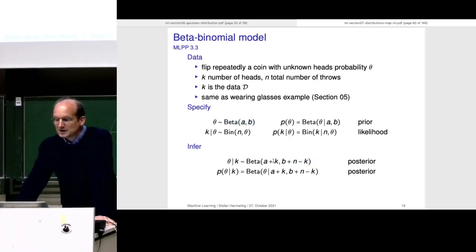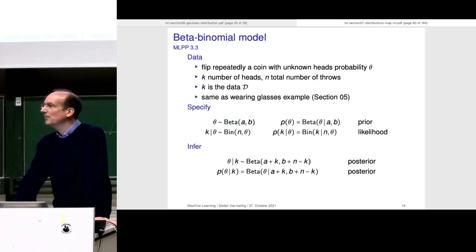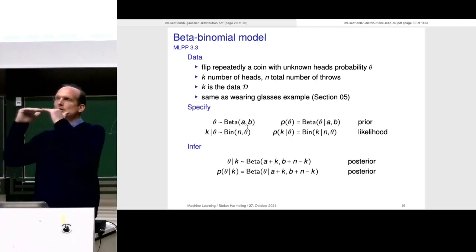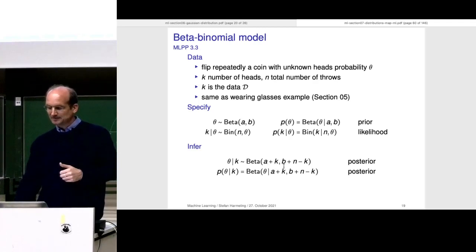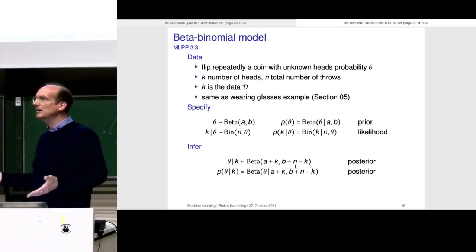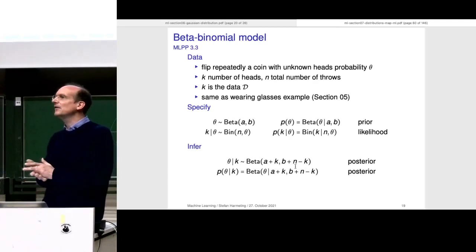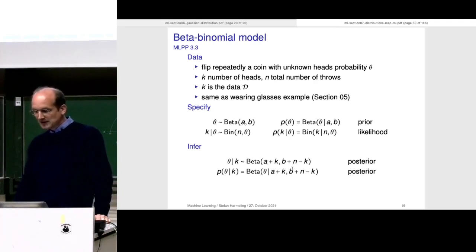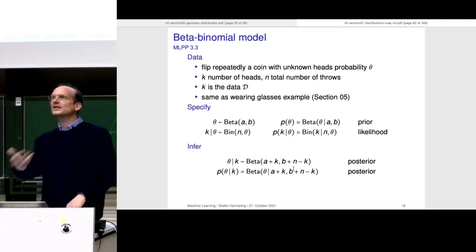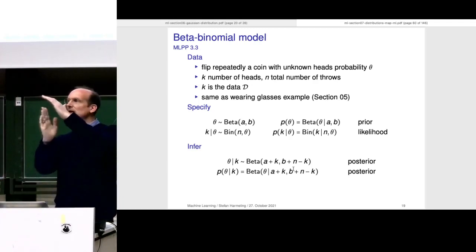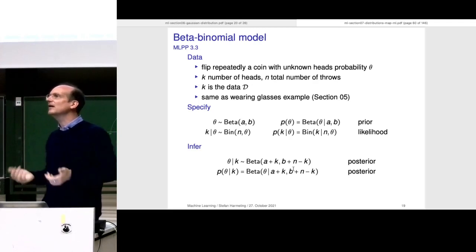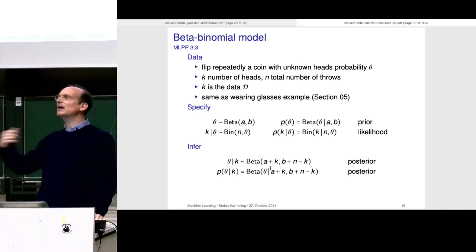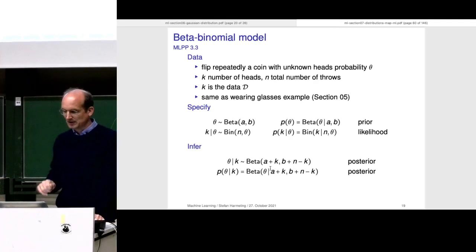If a and b are equal to one — corresponding to a uniform prior — and you observe k heads in n throws, the posterior shifts to the right location. For example, 75 heads out of 100 throws increases parameter a by 75 and parameter b by 25, and the posterior concentrates around 0.75 with some spread depending on a and b. You just plug in the counts of seeing heads and you get the distribution completely.